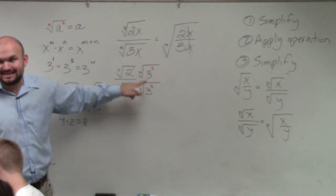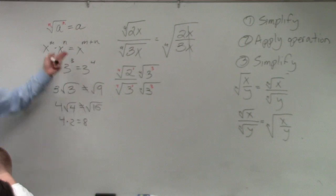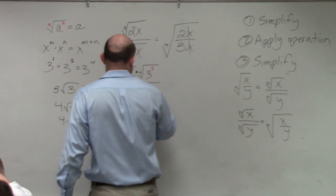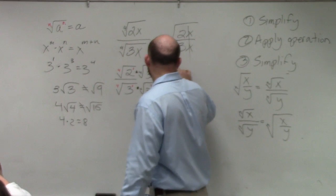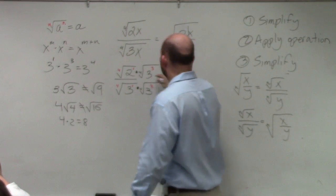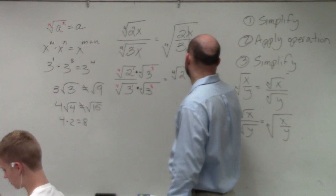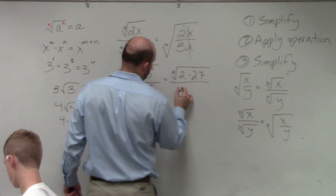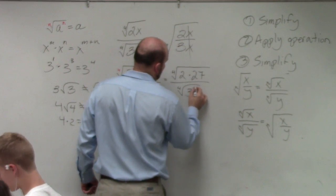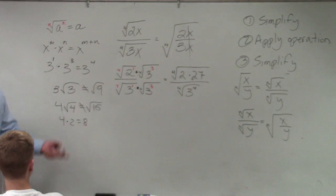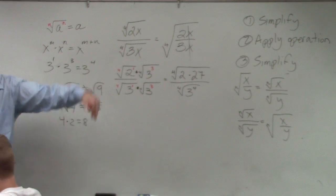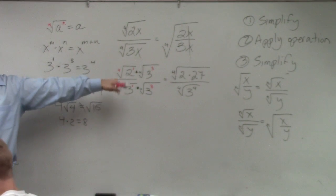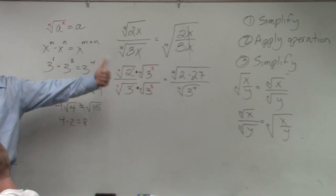Rather than writing it as 27, I like to keep it like this, again, so you can see using the rules of exponents. So when I multiply this across, I have the fourth root of 2. Now here, I'll simplify it, times 27, all over the fourth root of 3 to the fourth power. So now, we have the fourth root of 3 to the fourth power. Do you guys see how now I can get rid of my root? Because what's 4 to the fourth? What's the fourth root of 3 to the fourth power? Just 3.